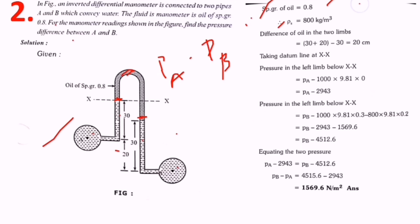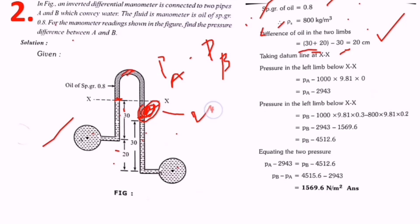The specific gravity of oil is 0.8, so converting to density: 0.8 times 1000 equals 800 kg per meter cubed. Next, the difference in oil levels between the two limbs: on one side, 30 plus 20 gives 50; minus the other side of 30 gives a difference of 20 centimeters. Taking the datum line at XX for further pressure calculations.